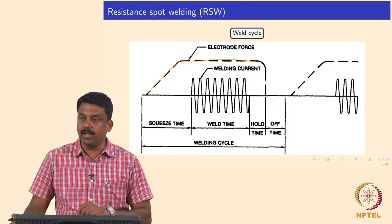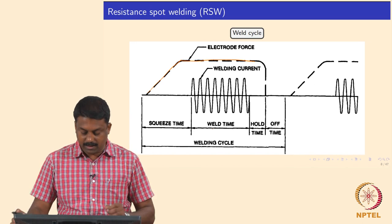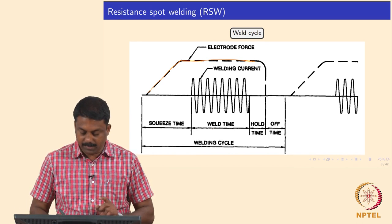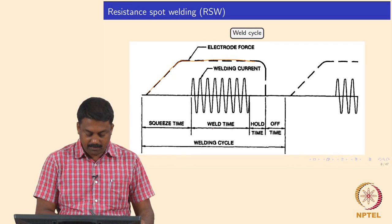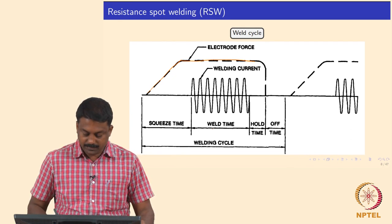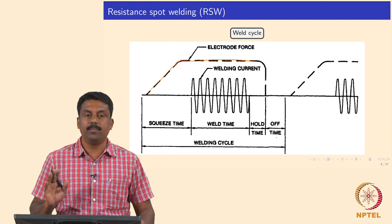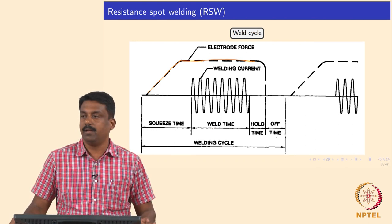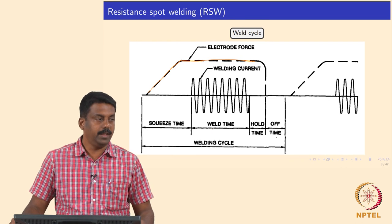The important components of this entire weld thermal cycle are: squeeze time, weld time, hold time, and off time. The entire welding cycle would run not more than 200 milliseconds in a typical resistance spot welding process.